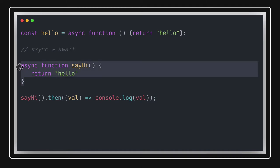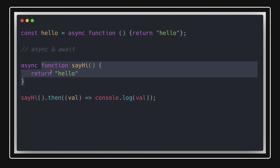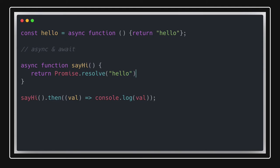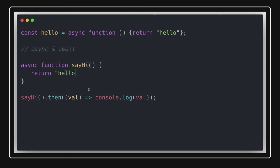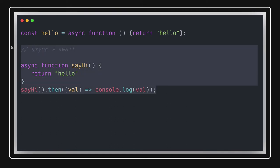An async function will always return a promise. If you are not writing await and not returning a promise explicitly, it will wrap the return value inside a resolved promise. You don't need to manually wrap it in `Promise.resolve()` — that would be a performance issue. You can simply return a number, string, boolean, object, or whatever you want.